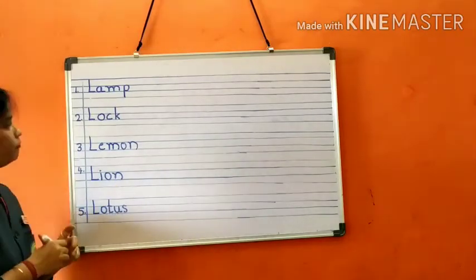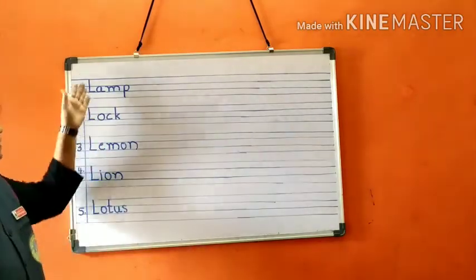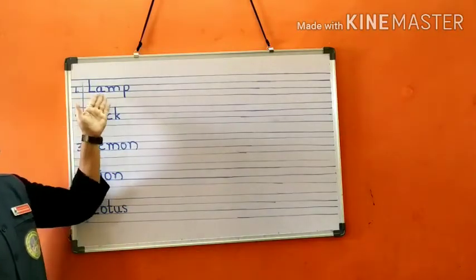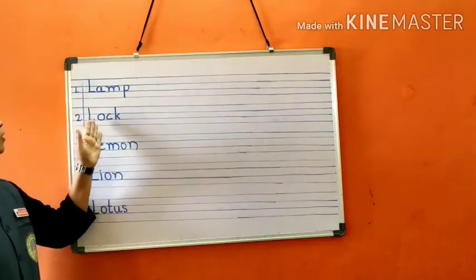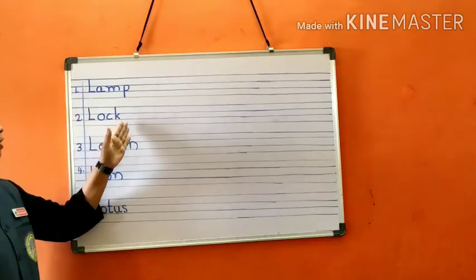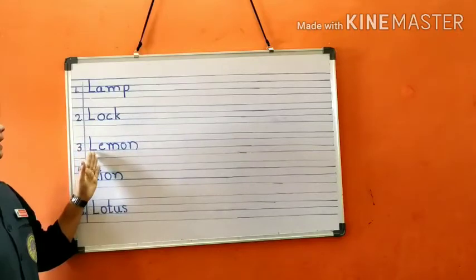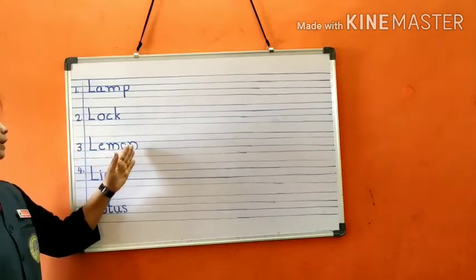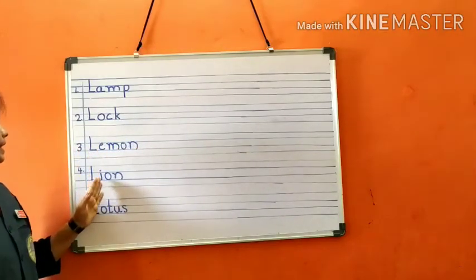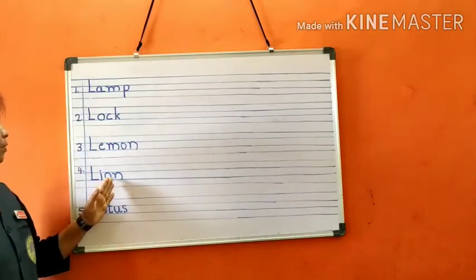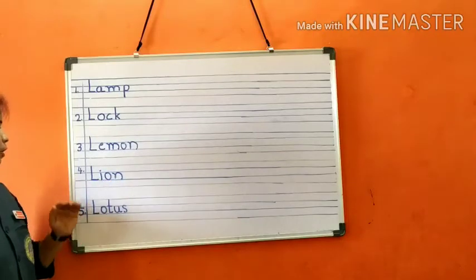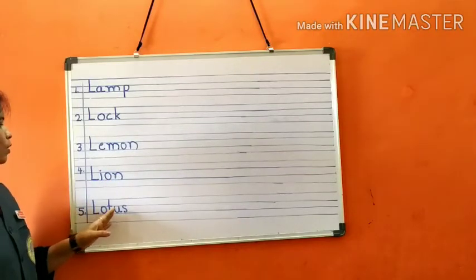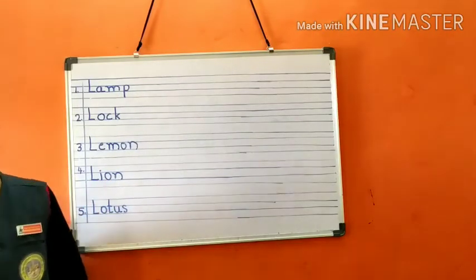Children, shall we repeat the words once again? L-A-M-P, lamp. L-O-C-K, lock. L-E-M-O-N, lemon. L-I-O-N, lion. L-O-T-U-S, lotus.